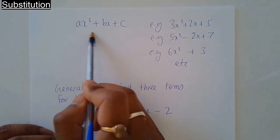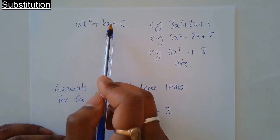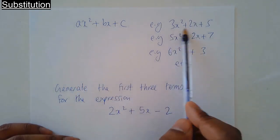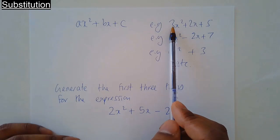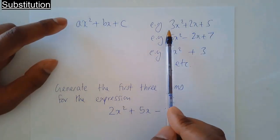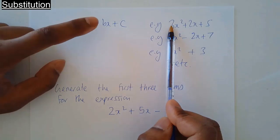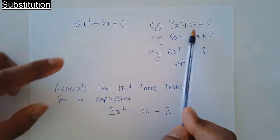Here I've got the general form of a quadratic expression: ax² + bx + c. These are some examples of quadratic expressions, so you can compare. You've got the x² term, the x term, and the number term. So here, a is equal to 3, b is equal to 2, c is equal to 5, and so on.